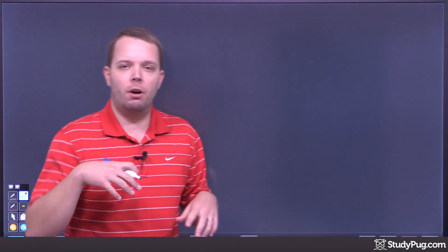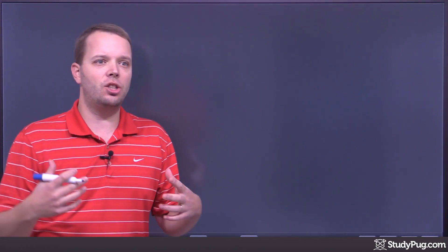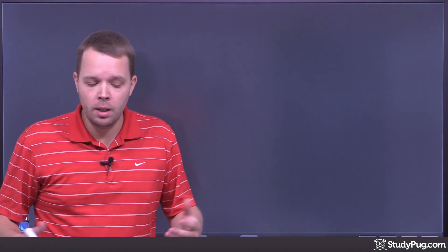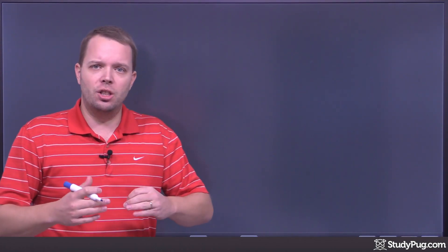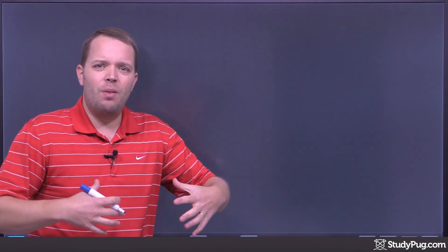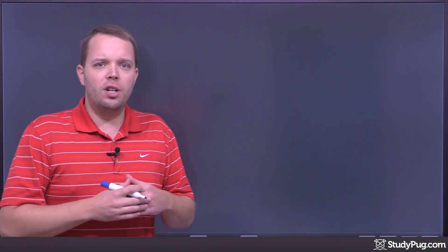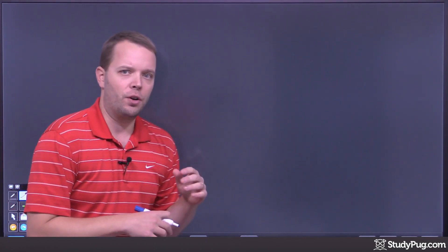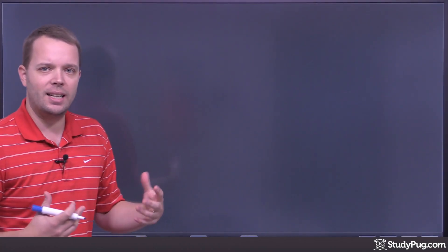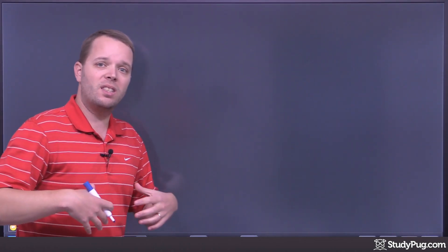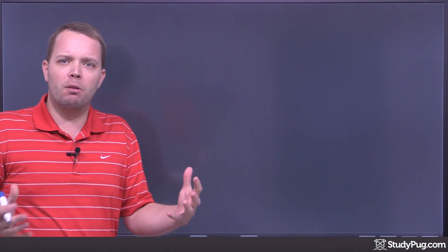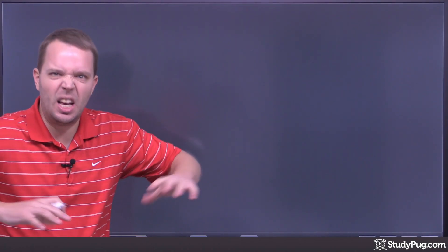We're going to talk about multiplying and dividing radicals. Radicals are essentially just roots of things that don't get nice, clean whole numbers — they're irrationals. I want to see how they interact together to be able to do some math with them. Let's talk about multiplying radicals first. We're going to take some ones we know are nice, clean numbers, and see if we can come up with a rule we can apply to the ugly ones.